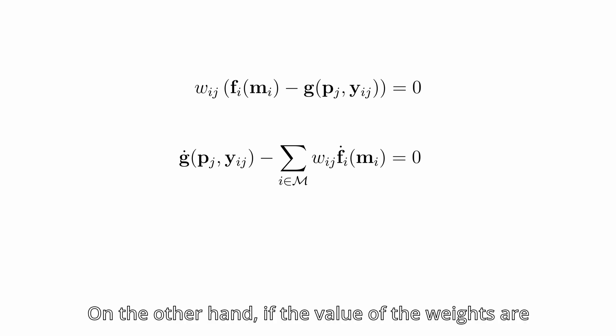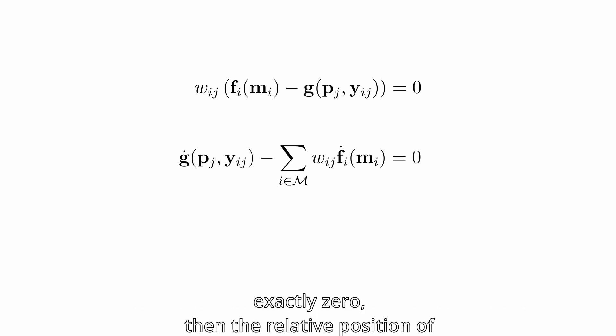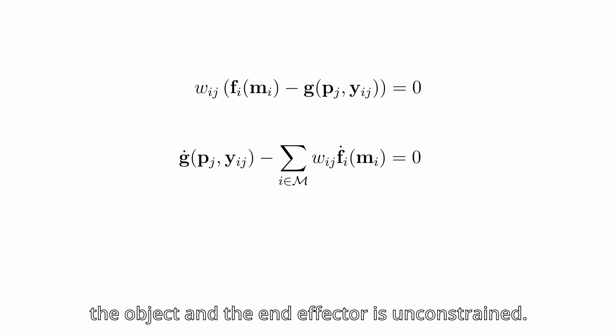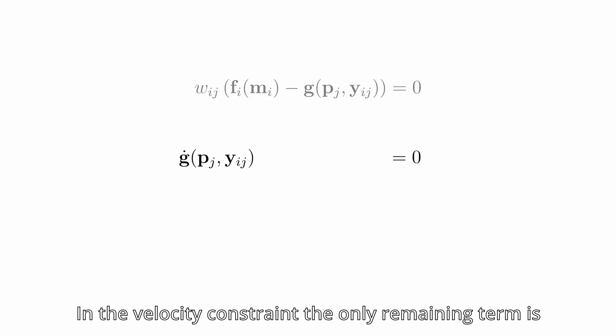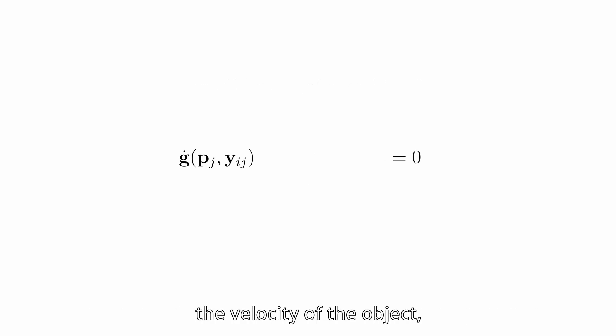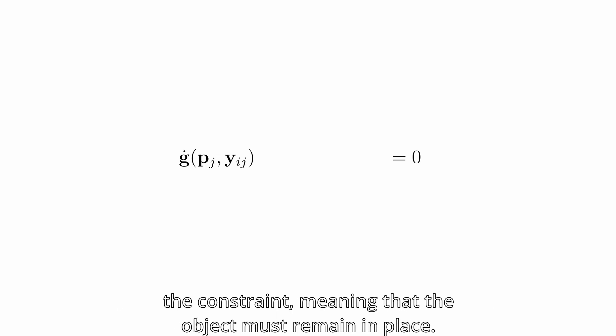On the other hand, if the values of the weights are exactly zero, then the relative position of the object and the end effector is unconstrained. In the velocity constraint, the only remaining term is the velocity of the object, which then must be zero in order to satisfy the constraint, meaning that the object must remain in place.